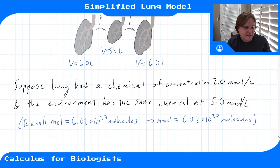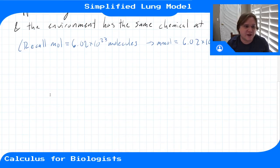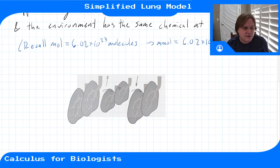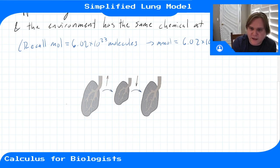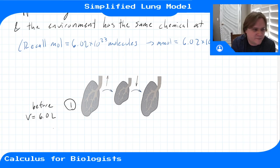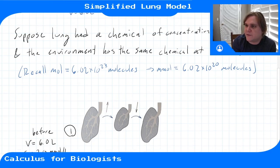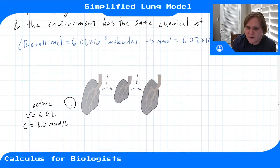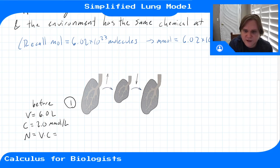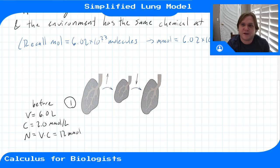Let's go step by step. Step 1, before we inhale or exhale — before we take a breath — our volume is 6 liters and our initial concentration is 2.0 millimoles per liter. The number of molecules of this chemical is volume times concentration, so that's 12 millimoles, or 12 times 6.02 times 10 to the 20 molecules. This is our initial condition.